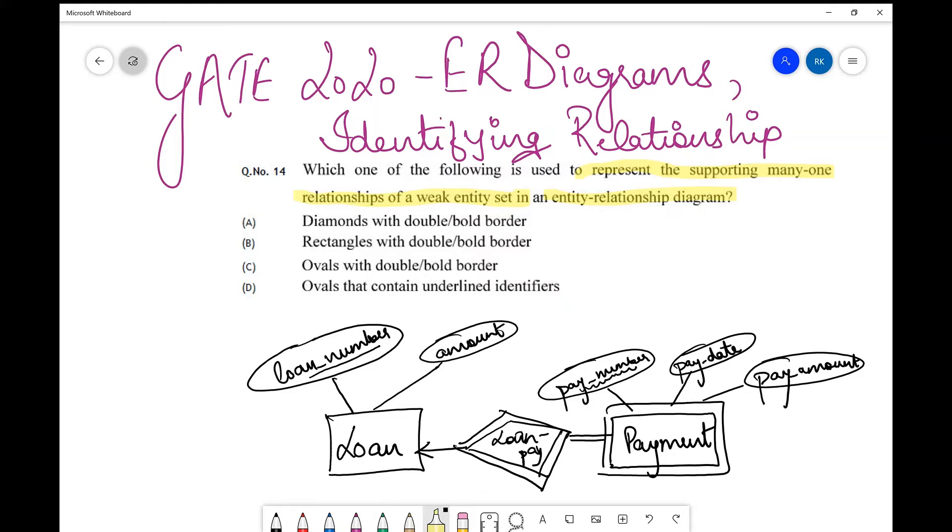The loan has a loan number and amount for which the loan was requested. The particular loan-pay relationship over here becomes an identifying relationship for this payment entity, because this is a weak entity set. Now there will be many payments associated with this loan, so this is basically a many-to-one relationship over here.